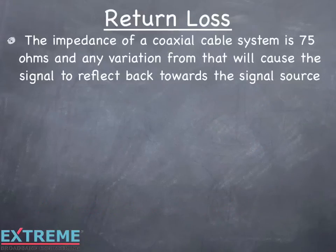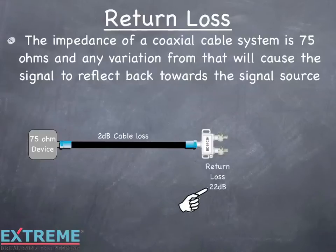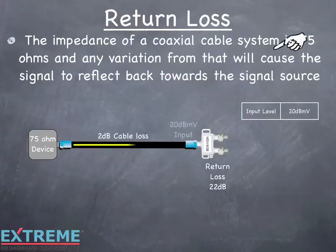The impedance of a coaxial cable system is 75 ohms, and any variation from that will cause the signal to reflect back towards the signal source. In this example, we have a 75-ohm device connected to a two-way splitter through a length of coaxial cable that loses 2 dB. The input port of the two-way splitter has a return loss of 22 dB. The signal is fed from the 75-ohm device through the coaxial cable, and at the input of the splitter we have 20 dBmV. The reflected signal will be attenuated by the value of the return loss of the device, which in this case is 22 dB.